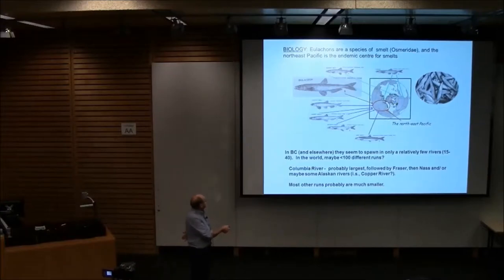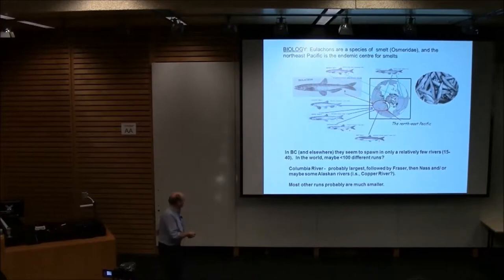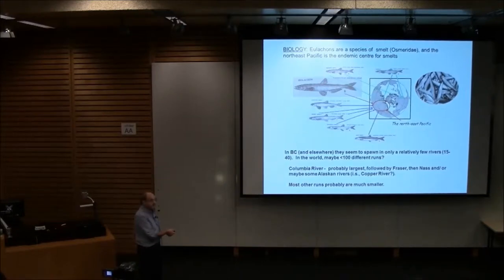This is biological background on eulachons. Eulachons are a smelt family. There's only about 11 species of smelt within the whole family Osmeridae. Most of them are confined here to the northeast Pacific. This is a eulachon. They get up maybe to the southern Bering Sea and down to the north part of California. We think in this total area, we don't know how many runs there are. I think there's probably between 30 or 40. The Columbia's the biggest, maybe the Fraser's next, but there's some big rivers in Alaska like the Copper.